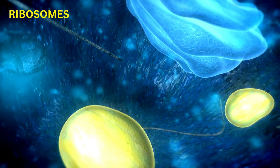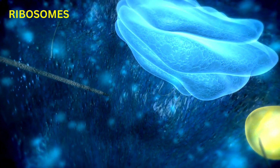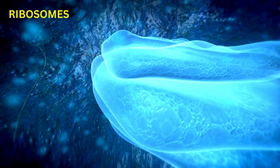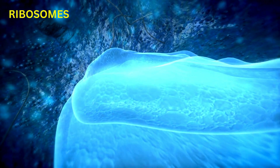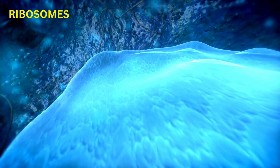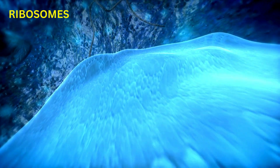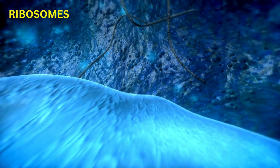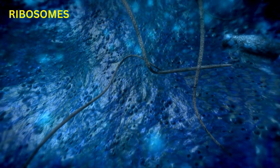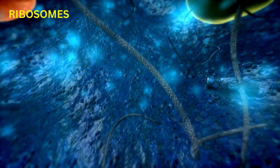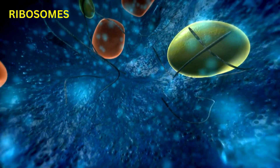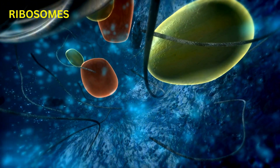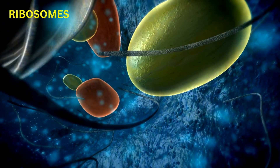Ribosomes Function. Ribosomes are cellular structures composed of RNA and protein that are involved in protein synthesis. They translate mRNA (messenger RNA) into polypeptide chains, which fold into functional proteins.